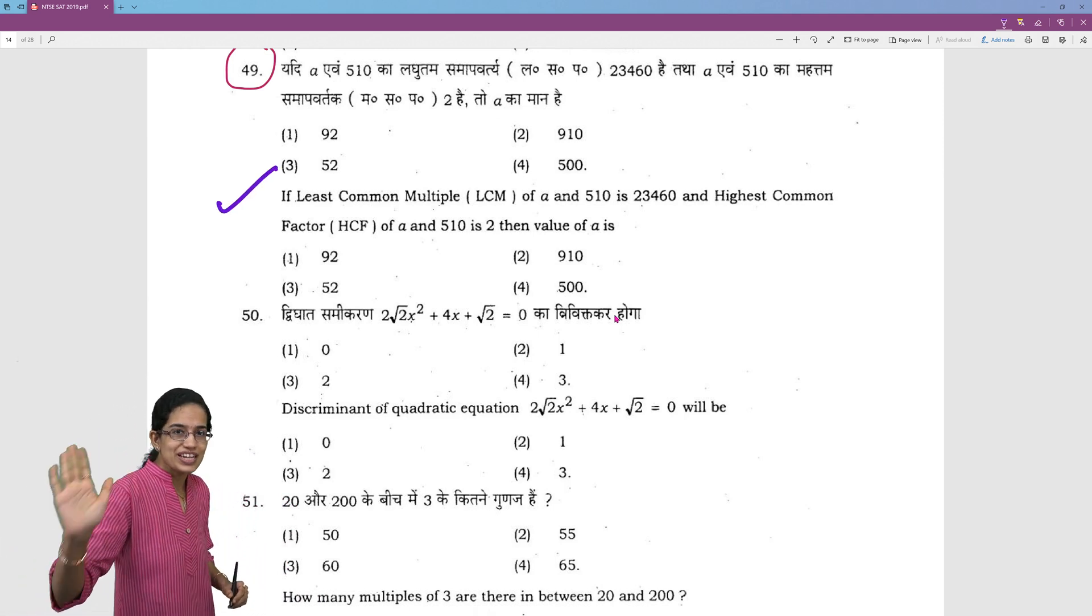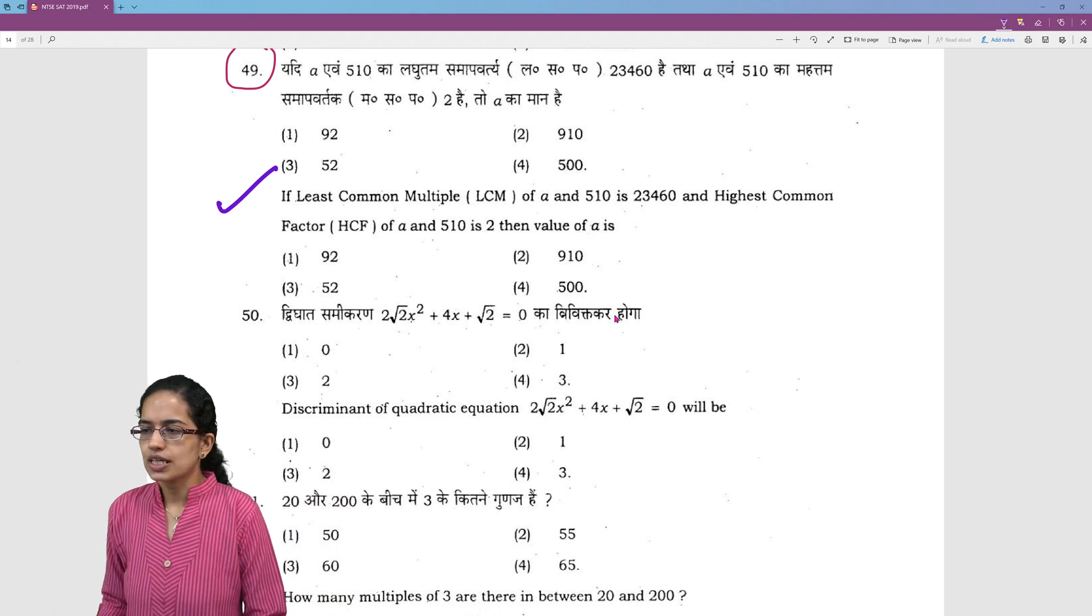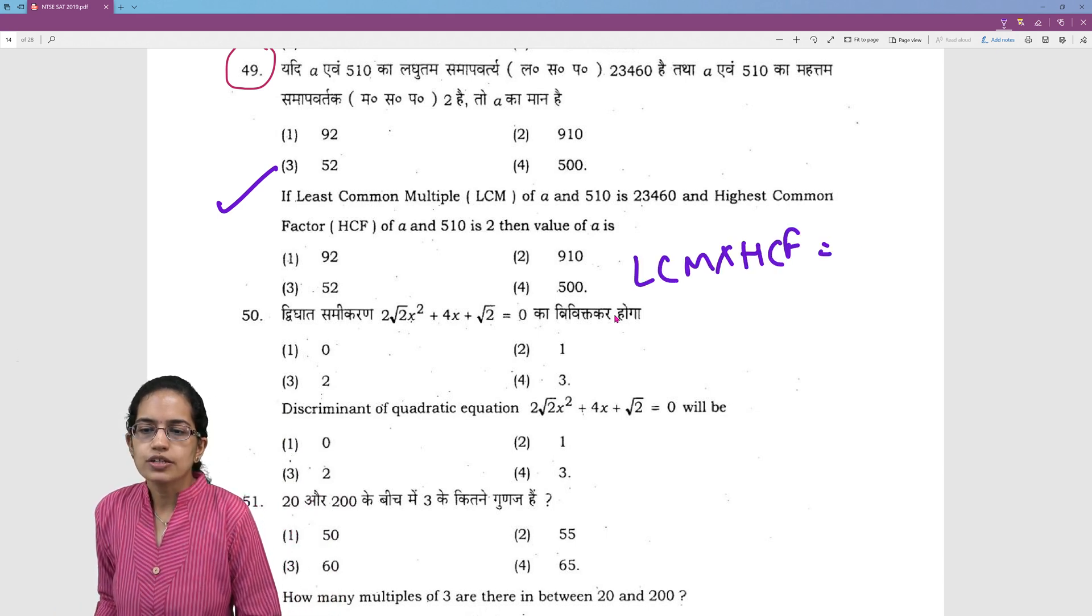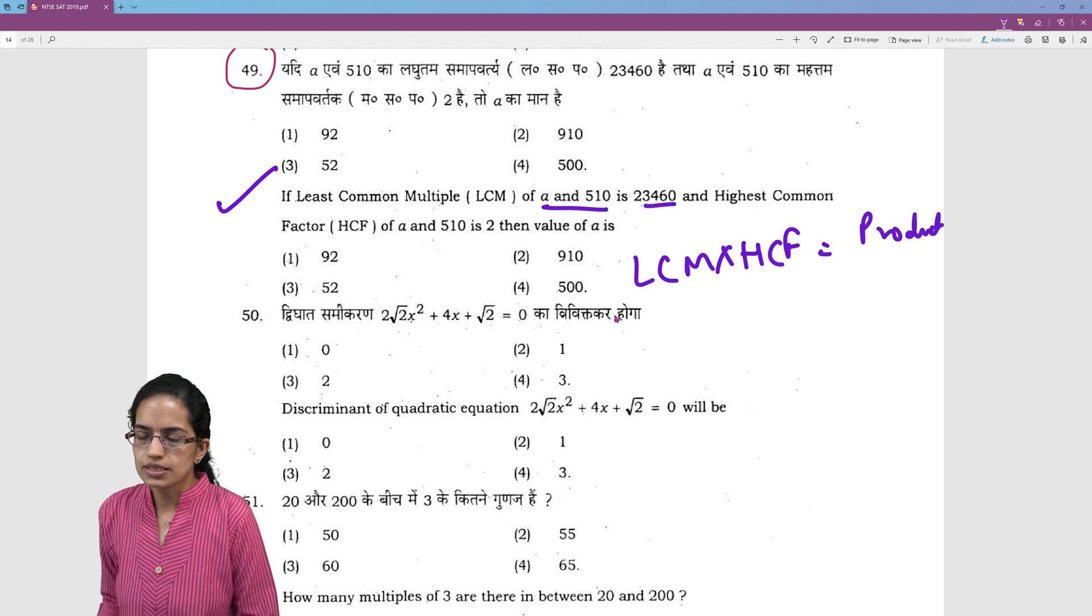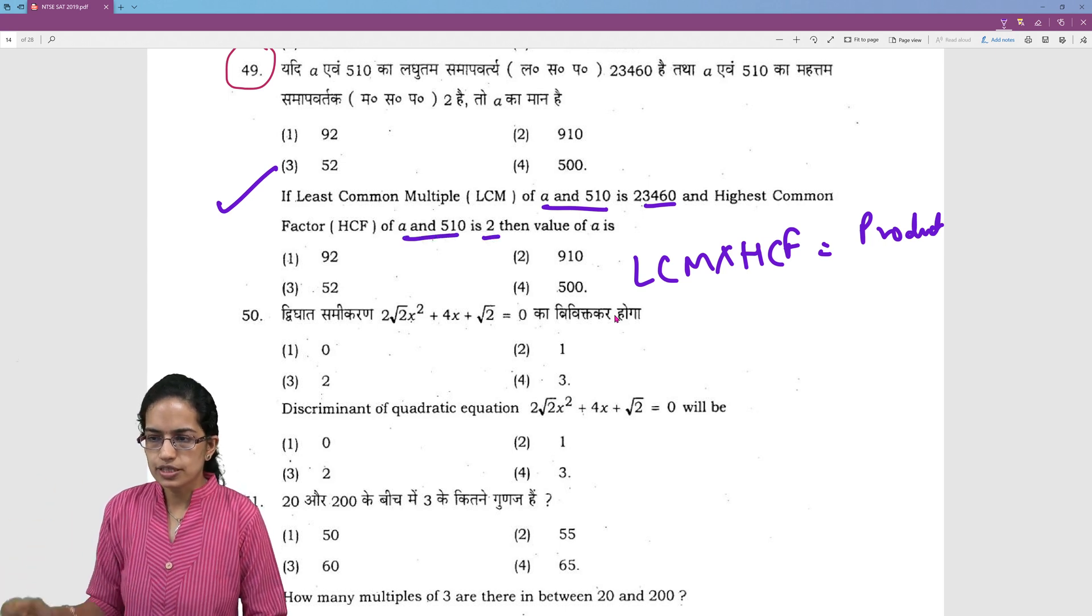This is a question which we have seen very similar in the MAT exam as well. In the MAT we have seen we already know LCM into HCF is the product of two numbers. Now in the first case product of these two numbers is this. The LCM of these two numbers is this and the HCF of these two numbers is 2.